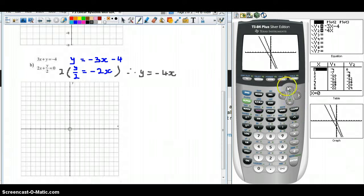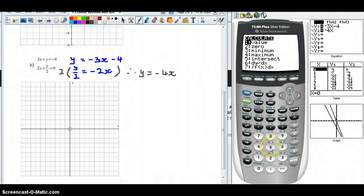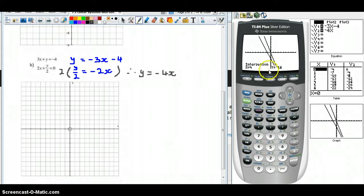What you see here is that the graphs are heading towards each other, but on this particular window, we cannot see the point of intersection. If I calculate, I'm going to select number 5, the point of intersection, first curve, second curve, and I'm going to hit my guess. The calculator is going to find my point of intersection for me, but the point of intersection is not going to be represented on the graph, because as you can see, it is intersecting at Y equals minus 16. This is an important lesson about what is known as the window.